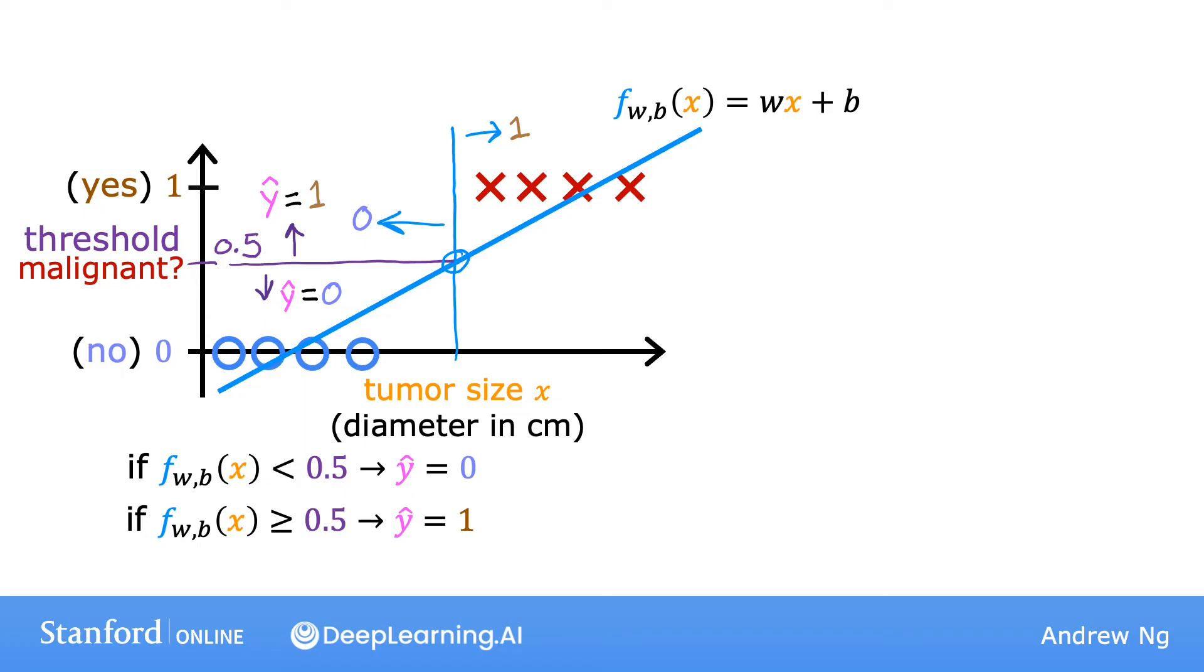Now, for this particular data set, it looks like linear regression could do something reasonable. But now, let's see what happens if your data set has one more training example. This one, way over here on the right. Let's also extend the horizontal axis. Notice that this training example shouldn't really change how you classify the data points. This vertical dividing line that we drew just now still makes sense as the cutoff where tumors smaller than this should be classified as 0, and tumors greater than this should be classified as 1. But once you've added this extra training example on the right, the best-fit line for linear regression will shift over like this. And if you continue using the threshold of 0.5, you now notice that everything to the left of this point is predicted as 0, non-malignant, and everything to the right of this point is predicted to be 1, or malignant.